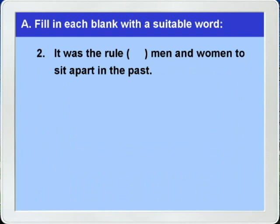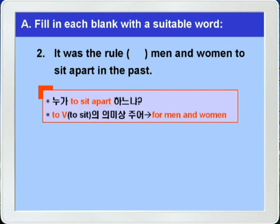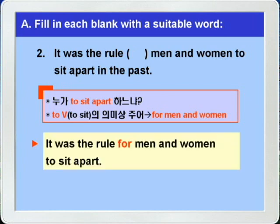2번으로 갑니다. 'It was the rule for men and women to sit apart.' 그것은 규칙이었다. Blank men and women이 to sit apart의 의미상의 주어이니까 for를 쓰면 되겠습니다. 과거에는 남자와 여자가 따로따로 앉는 것이 규칙이었다.